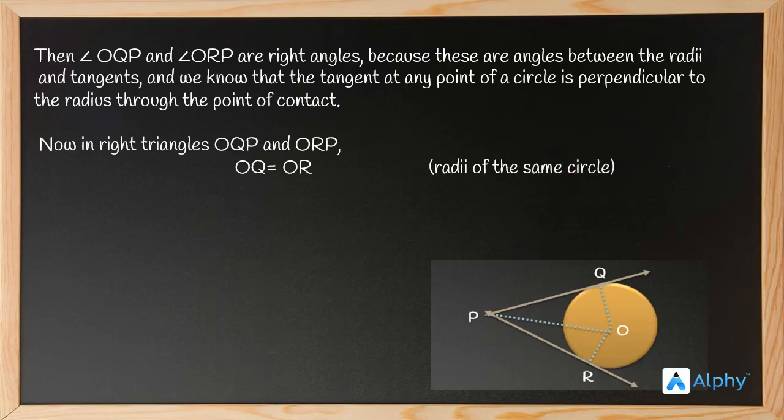OR because they are the radii of the same circle. OP equals OP because in both triangles OP is the common side. Therefore, triangle OQP is congruent to triangle ORP by the RHS rule.